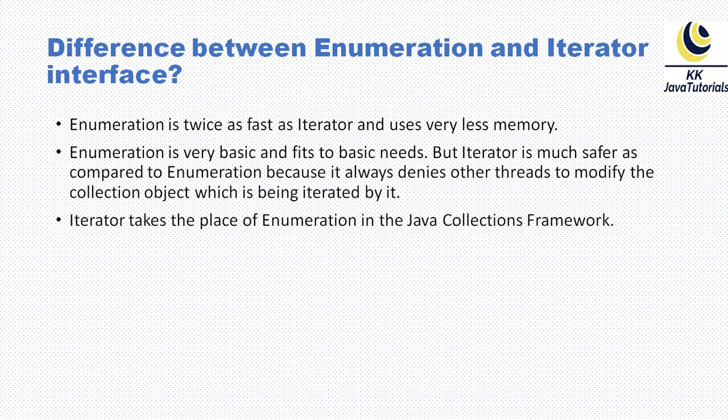The next difference is that Iterator takes the place of Enumeration in the Java collection framework. Enumeration is part of the legacy API from the JDK, from a time before the collection framework existed — when we had classes like Vector and Dictionary. At that time, only Enumeration was available, and it only supports reading data from the underlying collection; you cannot add or delete any elements.